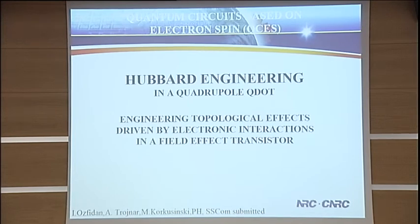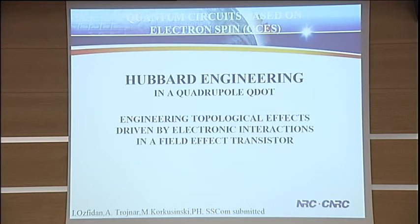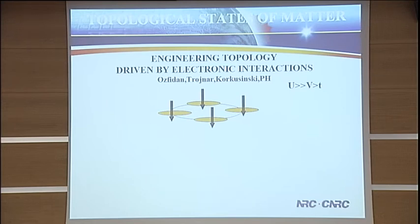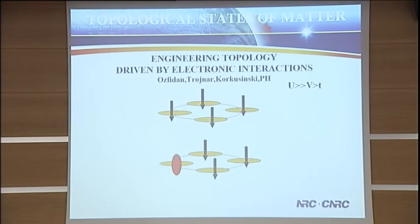Let's talk about an attempt to engineer topological effects driven by electronic interactions in the field-effect transistor platform. Let's take a quadruple quantum dot — we have a first attempt at making quadruple quantum dots from Institute NEL. We put one electron in each quantum dot and assume they are all spin-polarized. Now we remove one electron — this will be a hole in a three-electron spin-polarized complex.